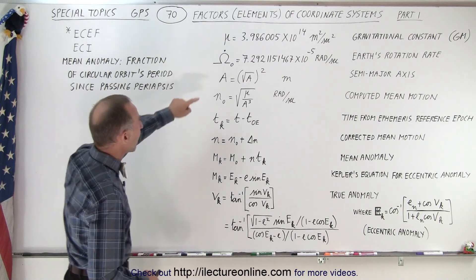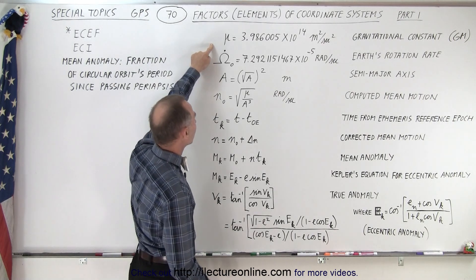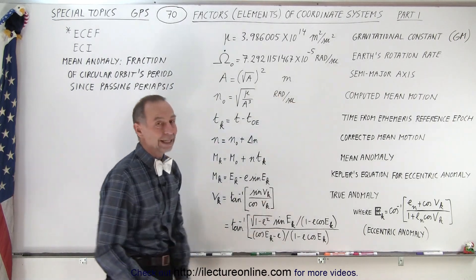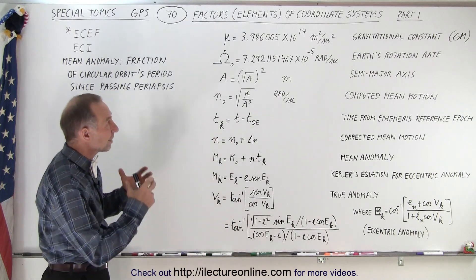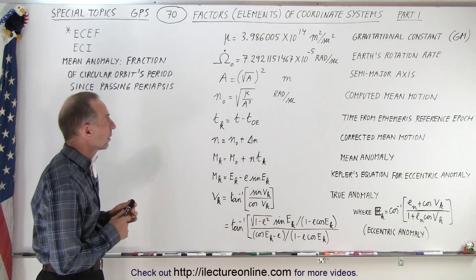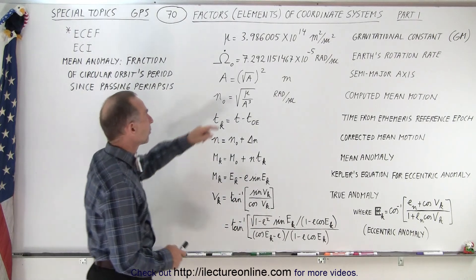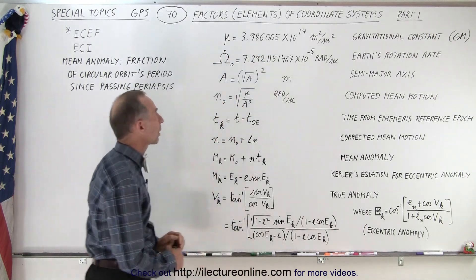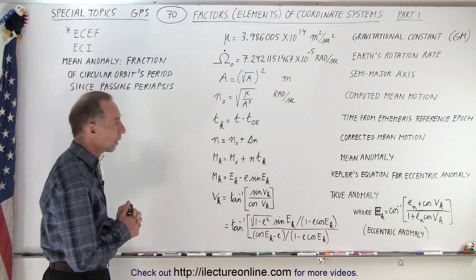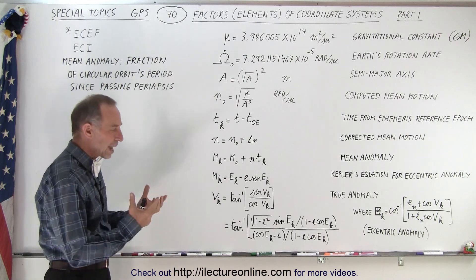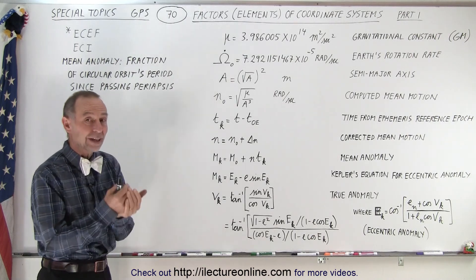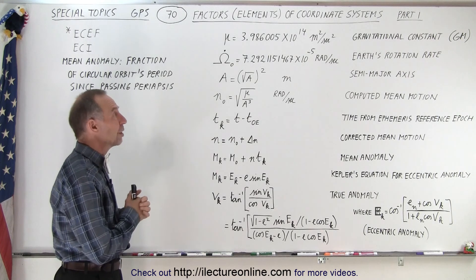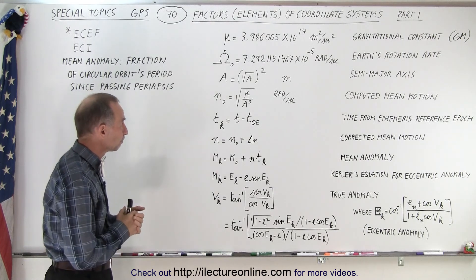What are some of these constants and factors we're using? Well, first of all, we have what we call the gravitational constant, which is essentially the product of the gravitational constant times the mass of the Earth. The number ends up being about 3.986 times 10 to the 14 meters squared per second squared. It's a more accurate way of being able to predict where the satellite is going to be, and they use the constant G times M.